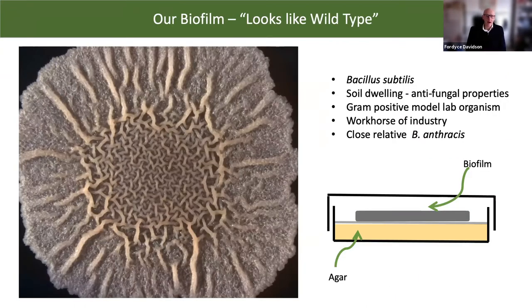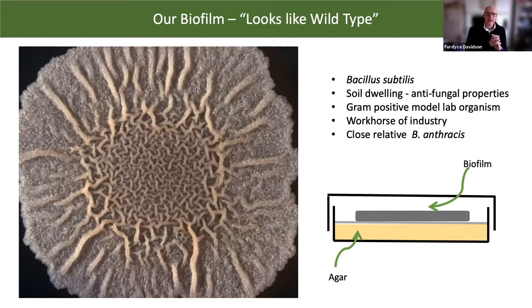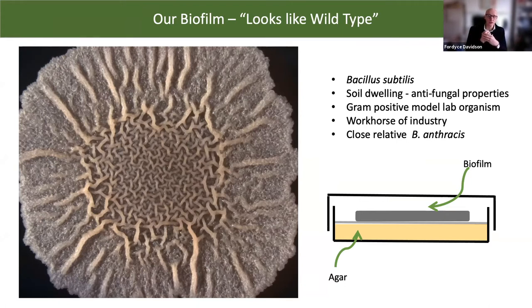The biofilms we're interested in are formed by a species called Bacillus subtilis. There's nothing particularly unique about this species — they're a soil-dwelling species with antifungal properties, which means they are used as a plant growth promoter in agricultural settings. They're a gram-positive organism, and what's called a model lab organism — a great deal is known about these microbes. Our colleagues in microbiology know precisely the gene makeup, so they can control the behavior of these biofilms genetically very carefully. Bacillus is also a really important workhorse of industry — it produces the enzymes in our washing powder, among many other biotechnological applications.